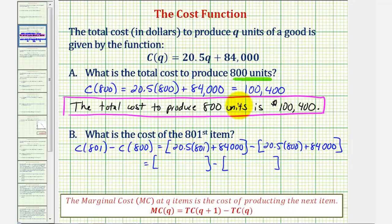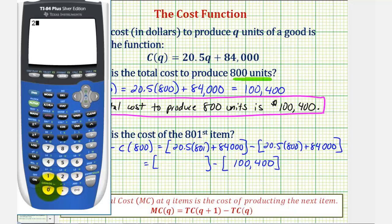We found C of 800 above, that's 100,400. Now we'll find C of 801 on the calculator, which is 100,420.5.